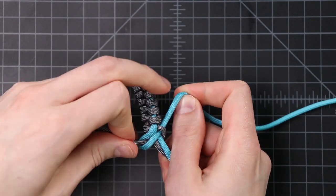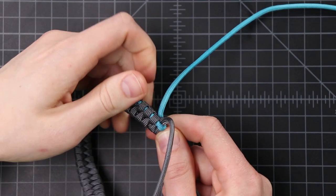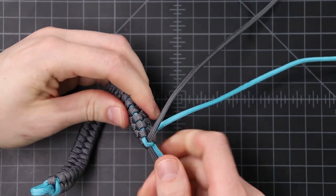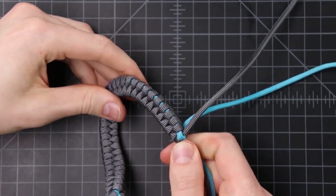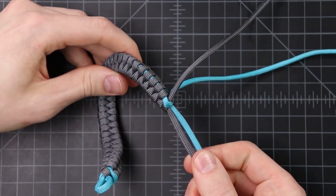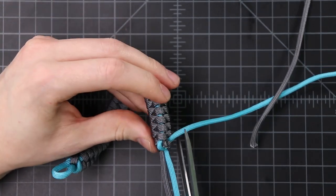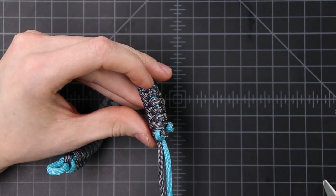We'll cinch both of those down. Mostly this blue one here. So that kind of hides the end of our cords. We'll clip both of those off and then continue with our diamond knot. I'll keep my fingers out of these scissors.